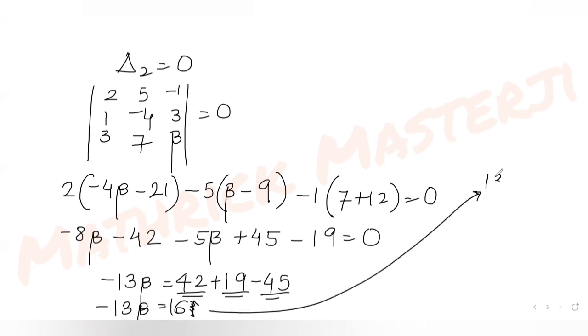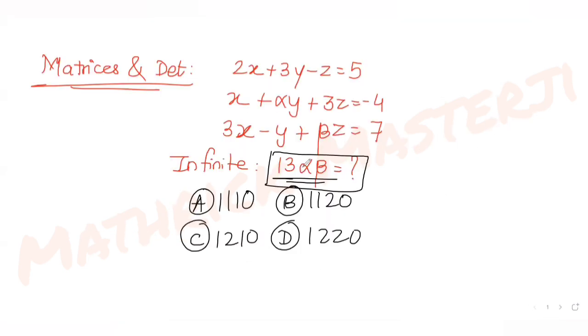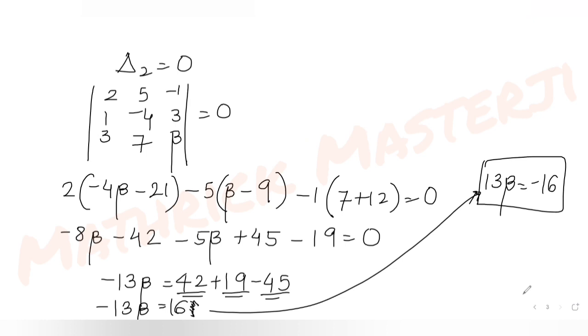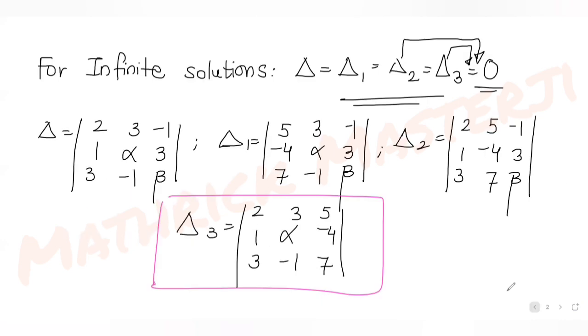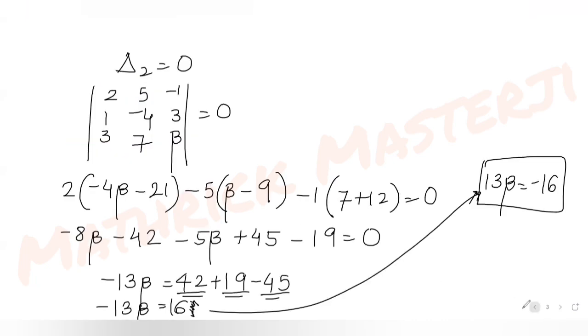Solving further: -13β = 42 + 19 - 45 = 16, so 13β = -16. I keep it as 13β since I need to find 13αβ. Now for delta 3 = 0: the determinant of [2, 3, 5 / 1, α, -4 / 3, -1, 7] = 0.